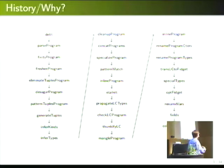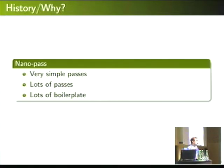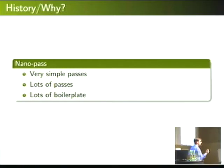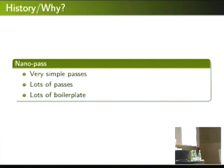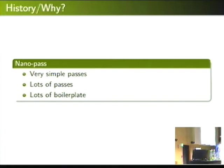This is a diagram of the passes just in the front end of the HABIT compiler. With a nano-pass style compiler, each pass is designed to be very, very simple, so that we can make sure we really understand what each pass does and attempt to avoid bugs that way. We have about 30 passes in the front end.